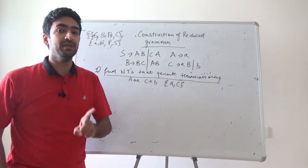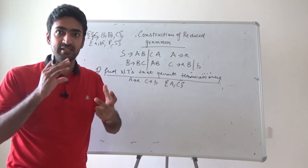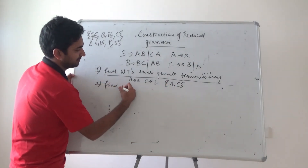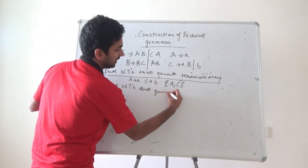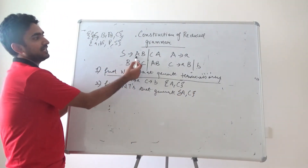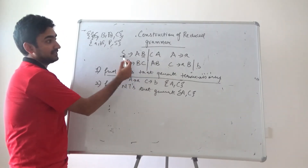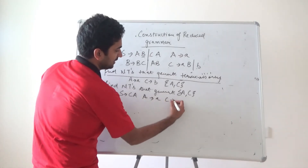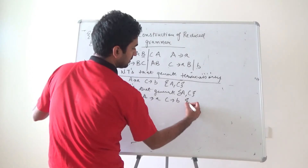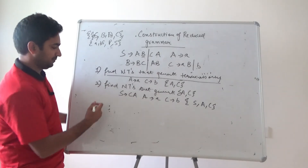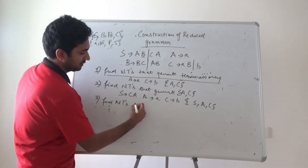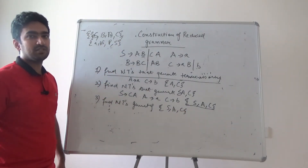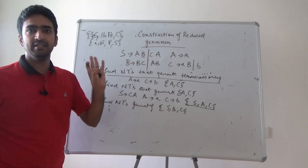Second step: find non-terminals generating the combination of A and C only — single A is fine, single C is fine, all combinations of A and C are fine, but no other non-terminal apart from A and C. S is generating A B, but B is appearing — I cannot take this rule. S is generating C A, which is what we wanted. So S is generating C A, A generates small a, C generates small b. Our set becomes {S, A, C}.